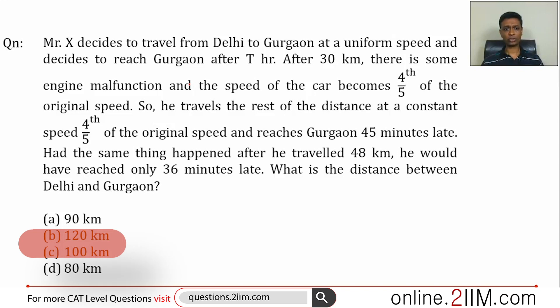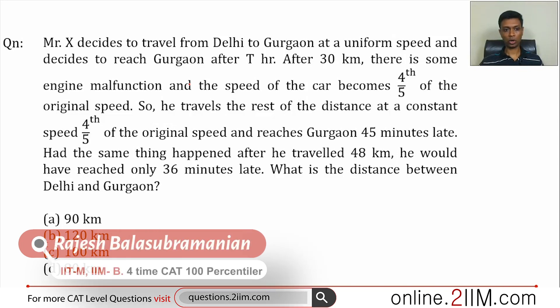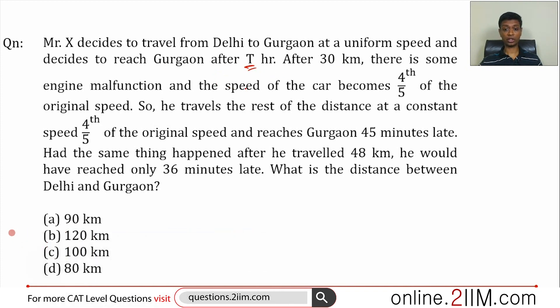Now to this one. Mr. X decides to travel from Delhi to Gurgaon at a uniform speed and decides to reach Gurgaon after 10 hours. After 30 kilometers, there is some engine malfunction and the speed of the car becomes four-fifths of the original speed. So he travels the rest of the distance at a constant speed, four-fifths of the original speed, and reaches Gurgaon 45 minutes late.